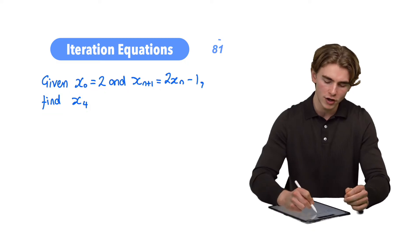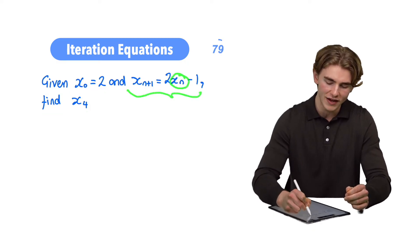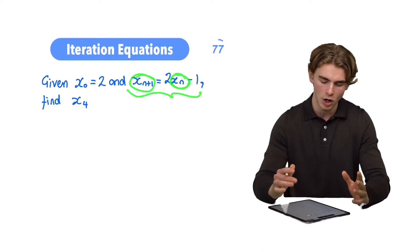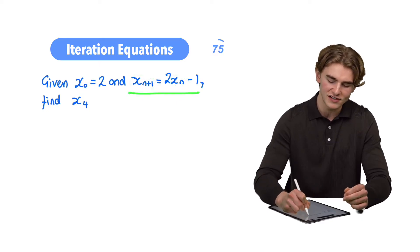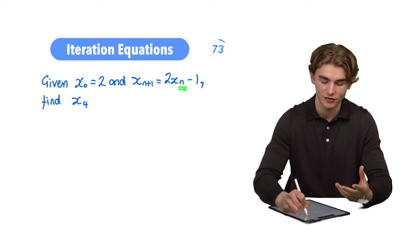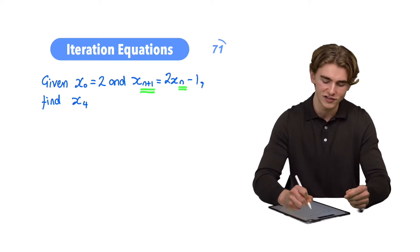What we're going to do is we're going to use our iteration equation to go from one value in our series to the next value. Notice, this equation tells us how to get from one value, the nth value, to the next value, the n plus first value.